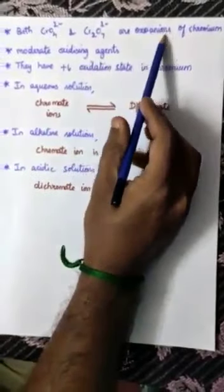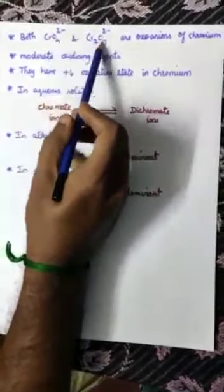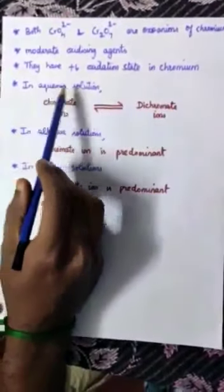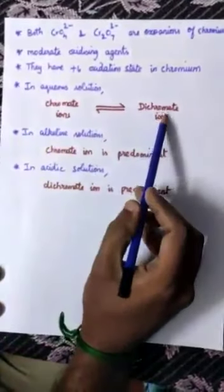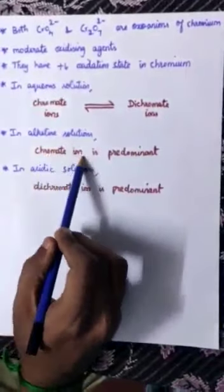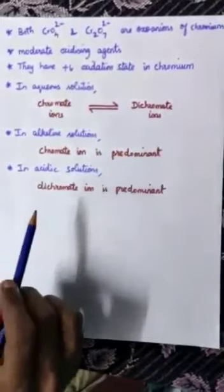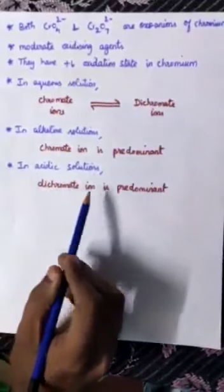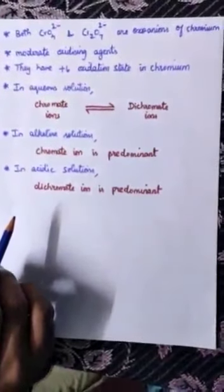Both chromate and dichromate are oxo-anions of chromium — meaning oxygen-carrying negative charge species. They are moderate oxidizing agents and both have chromium at plus 6 oxidation state. In aqueous solution, chromate ions are in equilibrium with dichromate ions. In alkaline solution, chromate ion is predominant over dichromate ion. In acidic solution, dichromate ion is predominant over chromate ion.